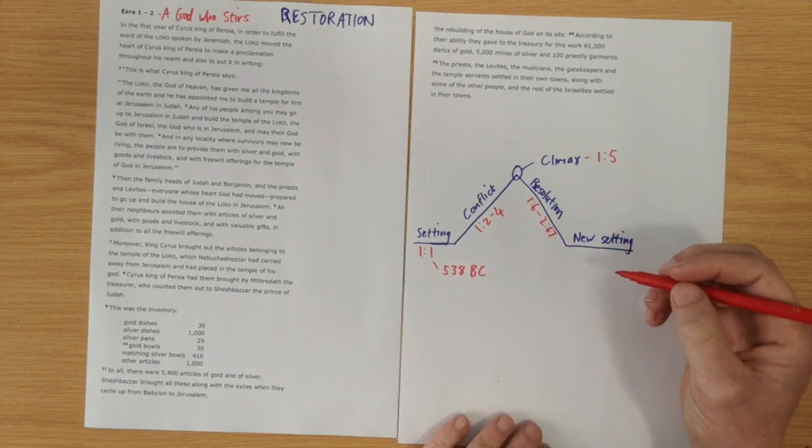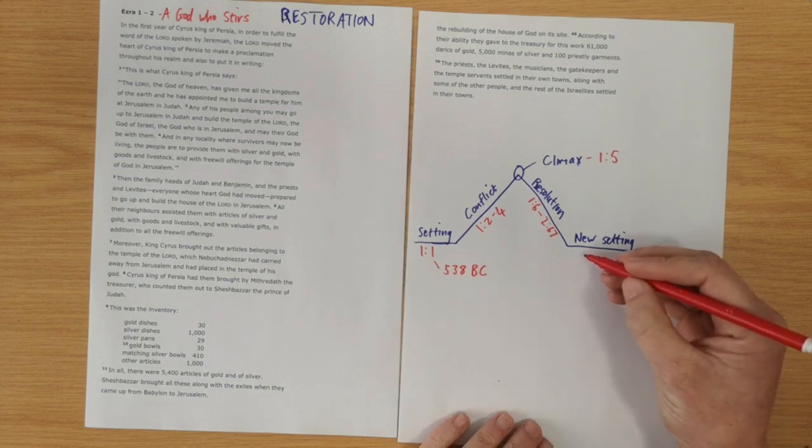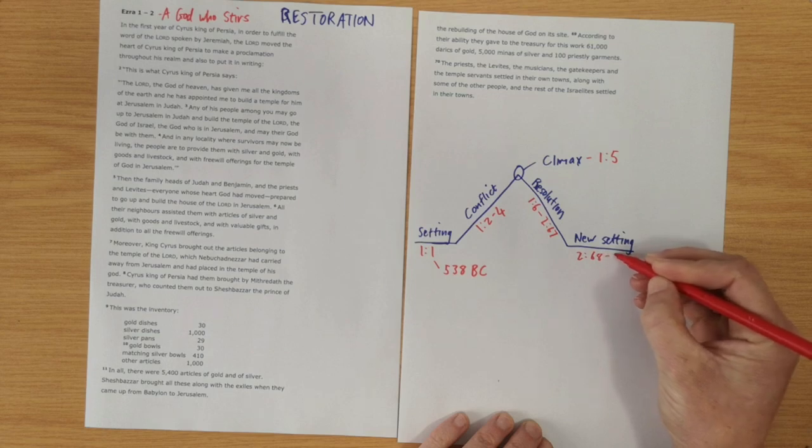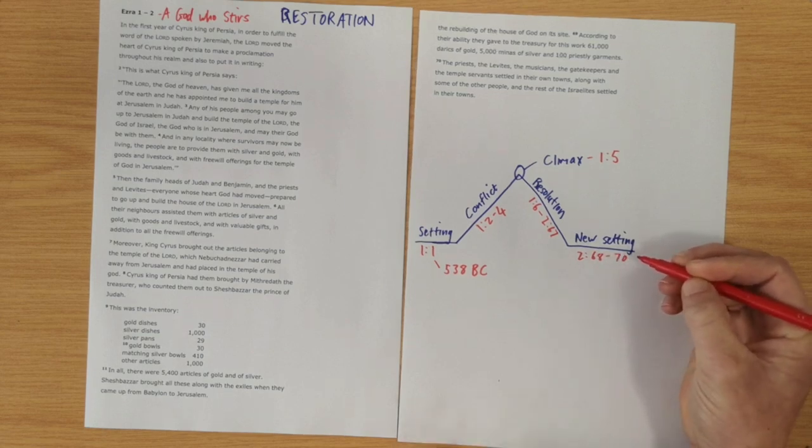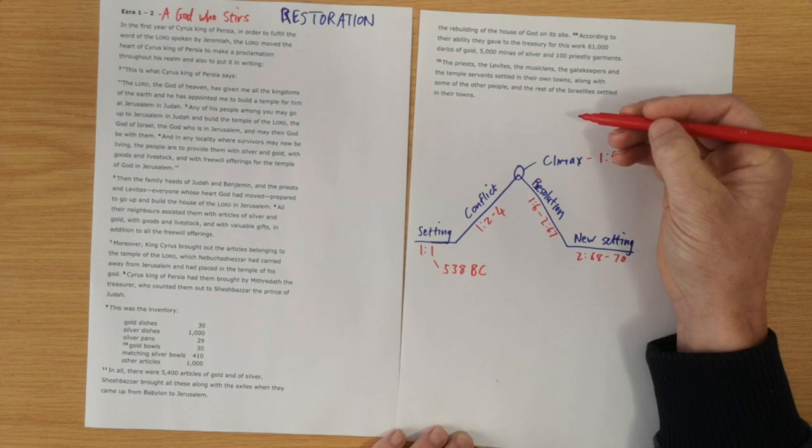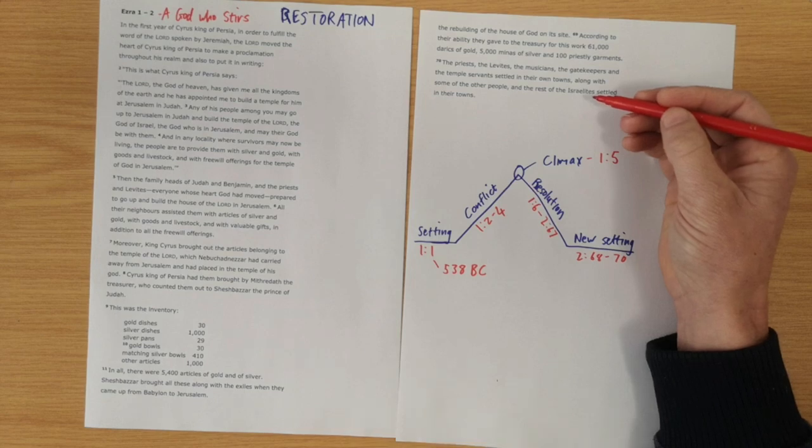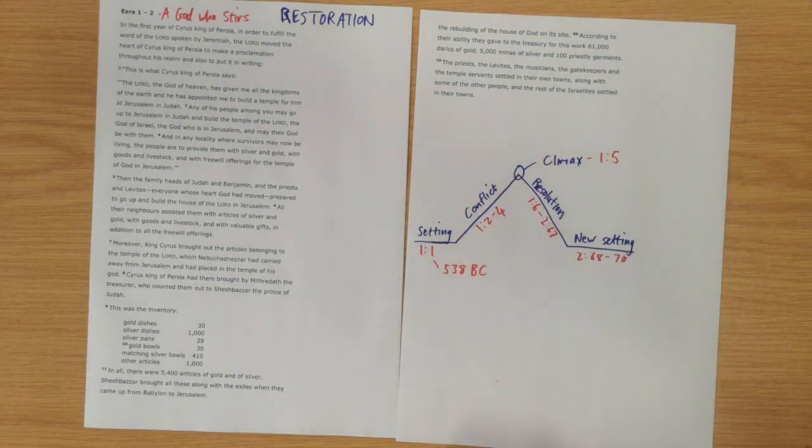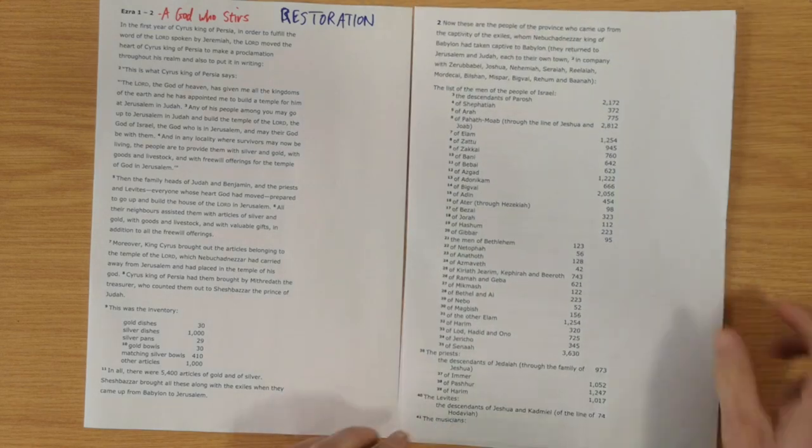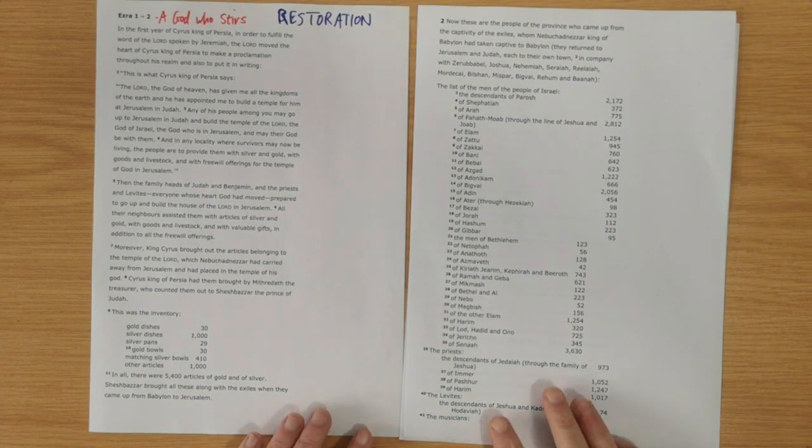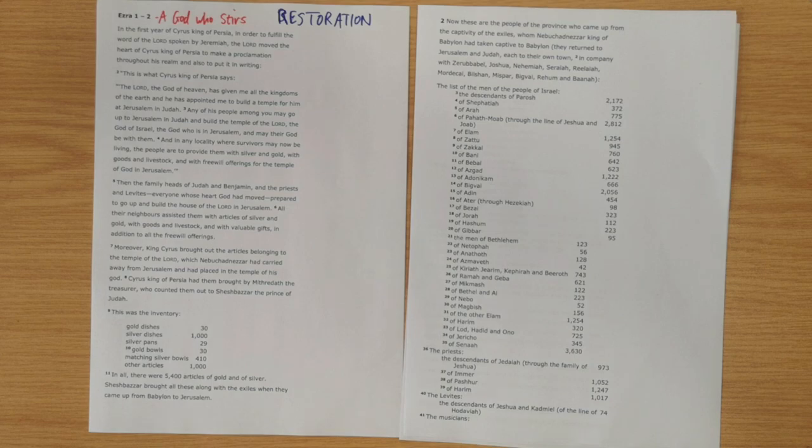And then the new setting is given in chapter 2 verse 68 to 70. So, these last few verses as we see the people back in the land and they are now ready to rebuild. So, this is a useful tool to keep in mind if you're looking at Old Testament narrative. Now, we're going to just dig into the text for a few minutes and just look at a few key characters in the text.